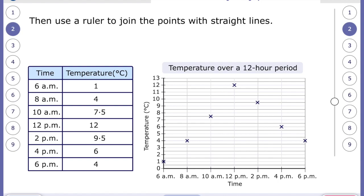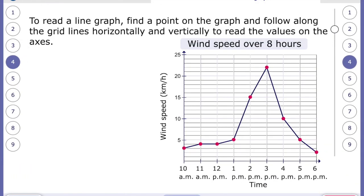And then you can use a ruler to join the points with straight lines. However, you will find when you go to secondary school they will encourage you to draw the lines together free hand without a ruler. But you do have to be careful that the lines travel in a straight line. Find a point on the graph, follow along the grid lines horizontally inverted to read the values on the axis.